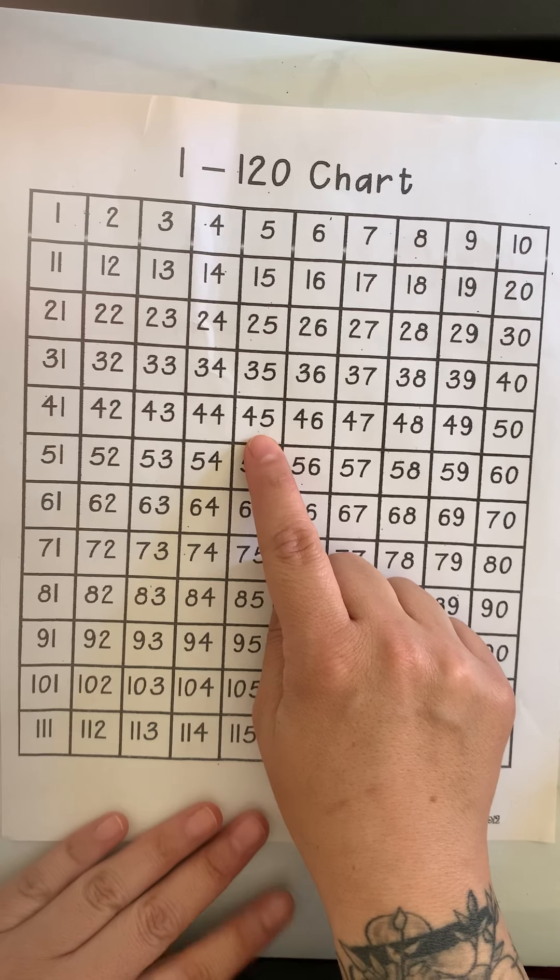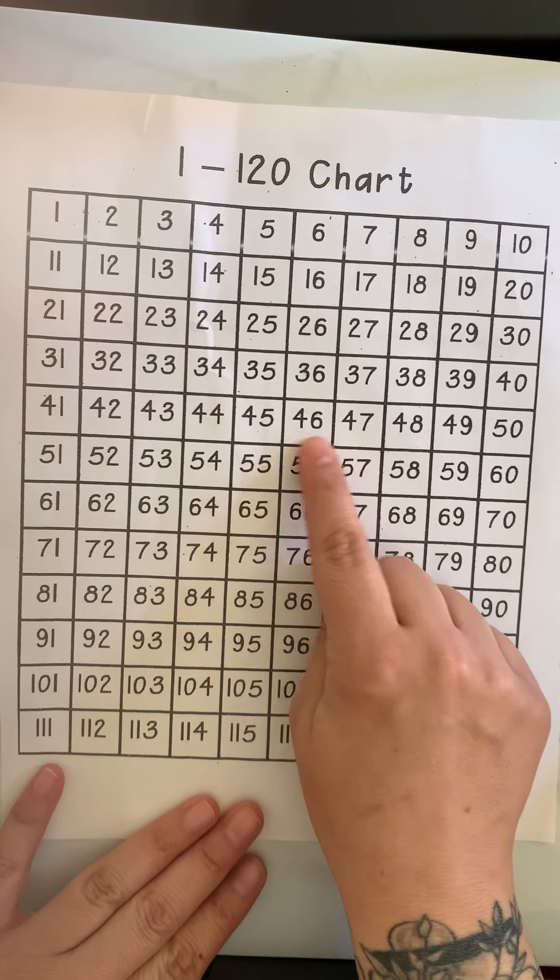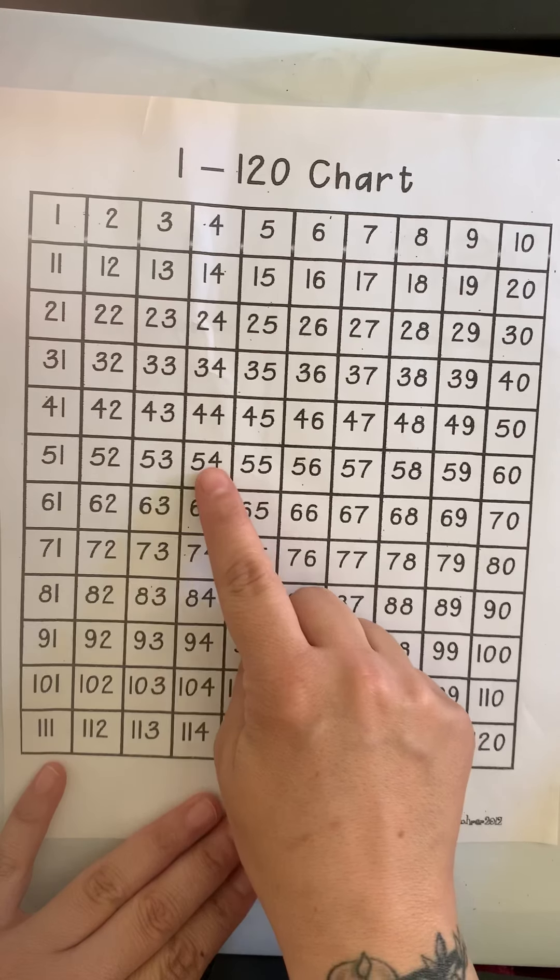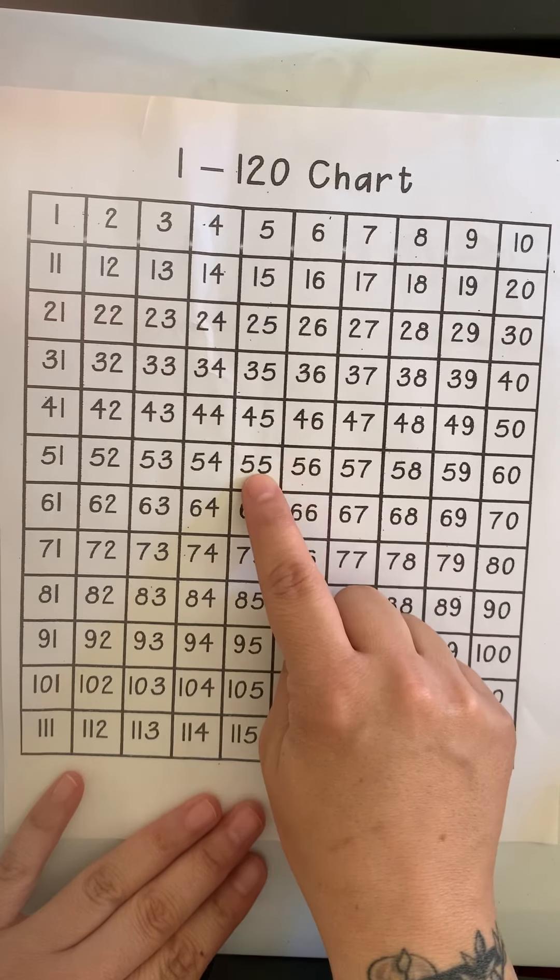And you can do the same thing with counting up or adding one more 10. You can start at 45. 1, 2, 3, 4, 5, 6, 7, 8, 9, 10. Ten more than 45 is 55.